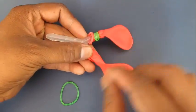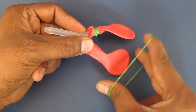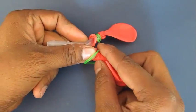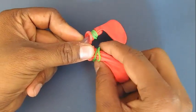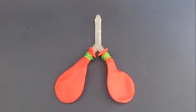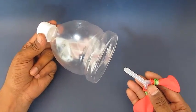Now take these two balloons and insert the Y tube inside the balloons. Tie them with the rubber band so that they are sealed properly. These are our two lungs.